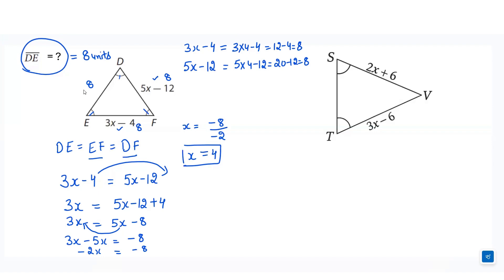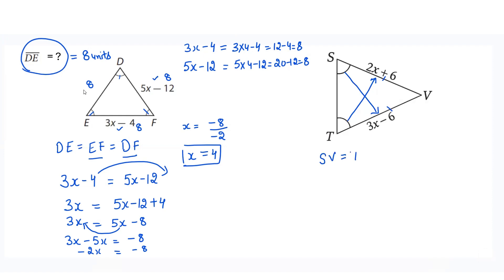Similarly, in the next diagram they have given only two angles. In a triangle where only two angles are equal, it is an isosceles triangle. The sides opposite to the equal angles should be equal. So this side and this side should be equal because it is an isosceles triangle. In an isosceles triangle, the two base angles are equal and the sides opposite to the base angles are equal.